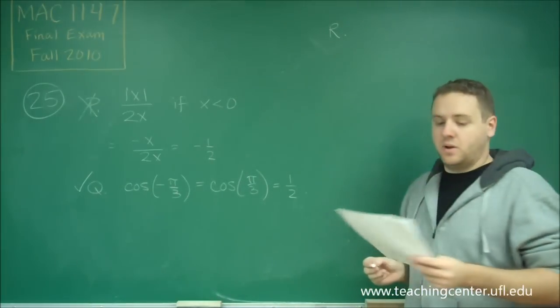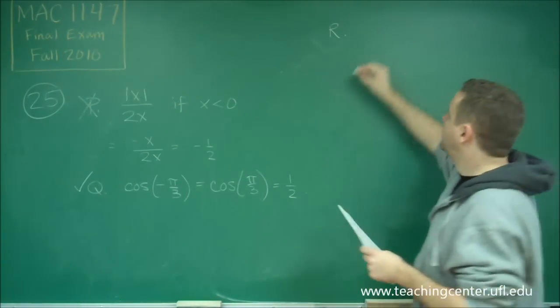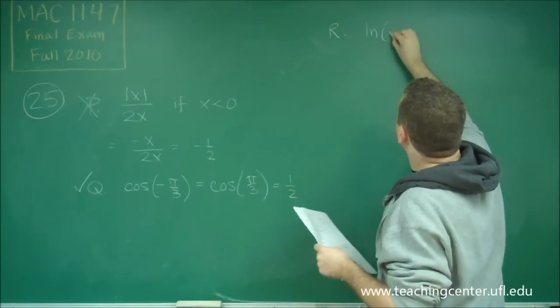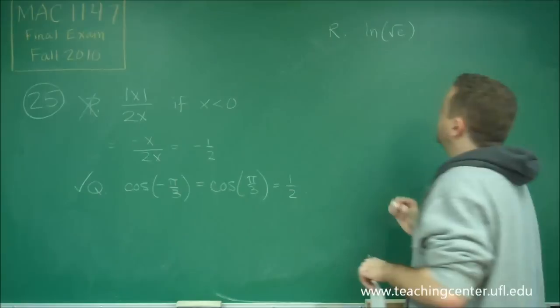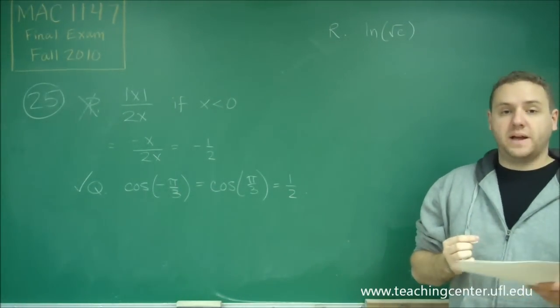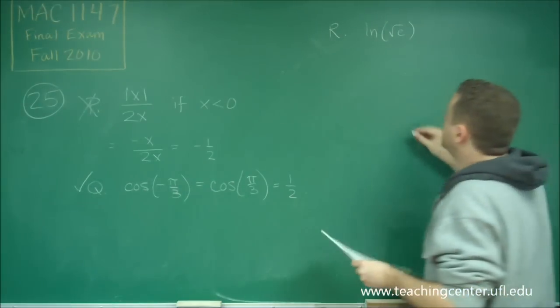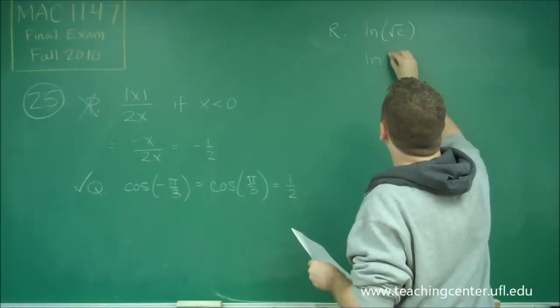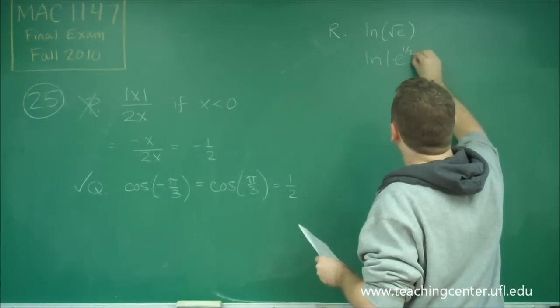And finally, statement R. Statement R says ln of the square root of e. So, remember that we can always write roots as fractional powers. So, this is the same thing as ln of e to the one-half.